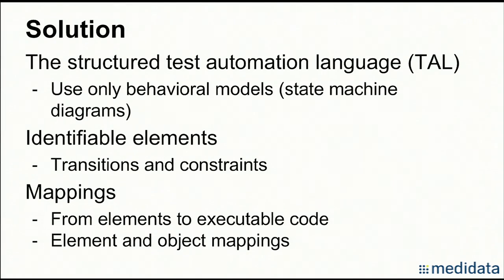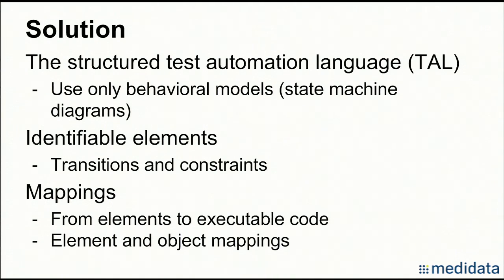My solution is to let testers use a test automation language to create mappings from the model to executable test code by using only one behavioral model, such as a state machine diagram. For state machine diagrams, there are two identifiable elements that need mappings: transitions and constraints. Testers can create element mappings for transitions and constraints. If the test code for element mappings requires objects, testers can create object mappings to initialize those objects.